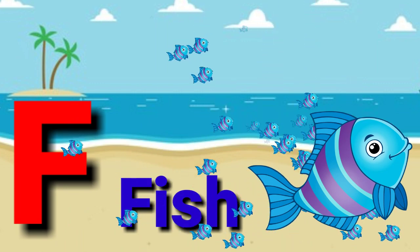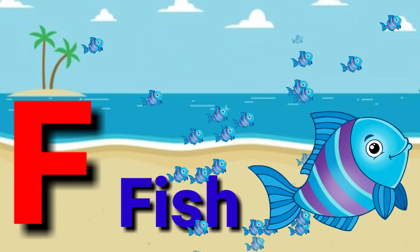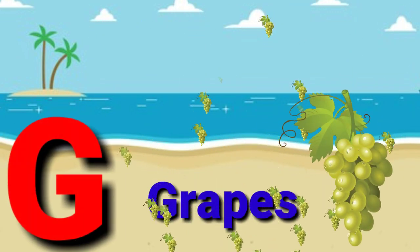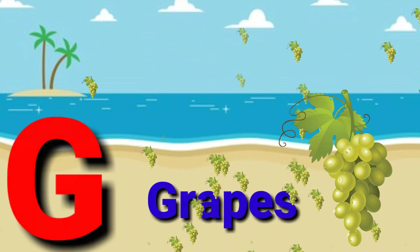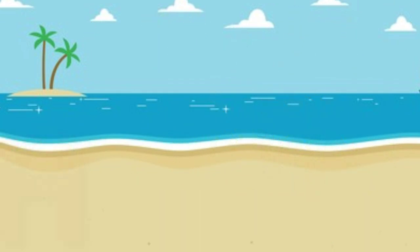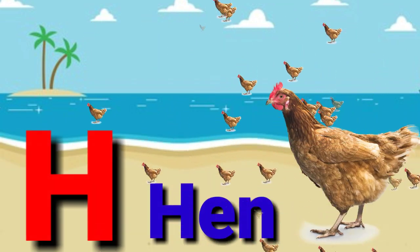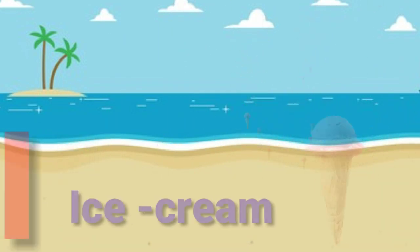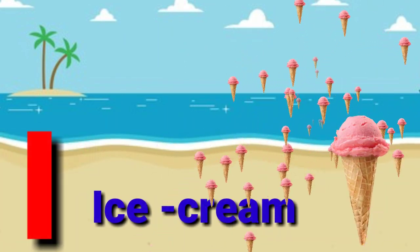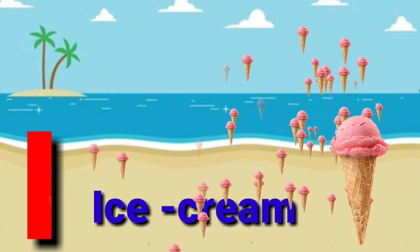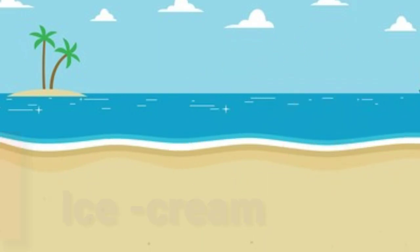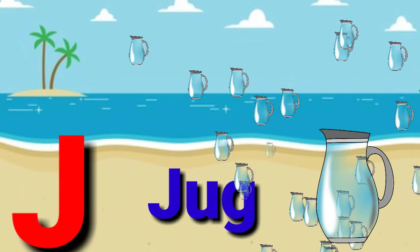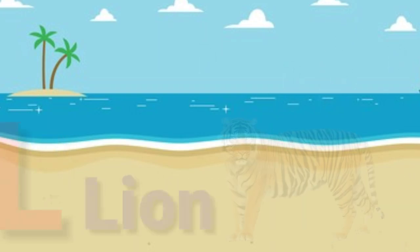F. F for face. G. G for grapes. H. H for hen. I. I for ice cream. J. J for jug.